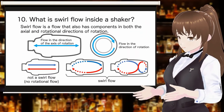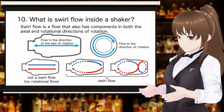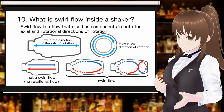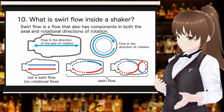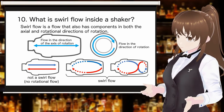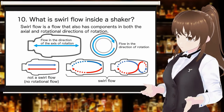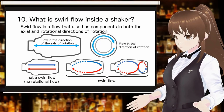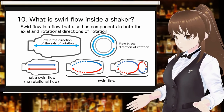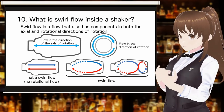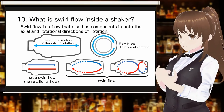This slide explains how the swirl flow inside the shaker works. A swirl flow is a flow that has components in both the axial and rotational directions. Axial flow is the forward-backward flow inside the shaker. Rotational flow is the flow that whirls along the inner surface of the shaker. In other words, flow in the front-back direction only is not a swirl flow. To achieve a swirl flow inside the shaker, a vortex flow along the inner surface is required in addition to the back-and-forth flow.